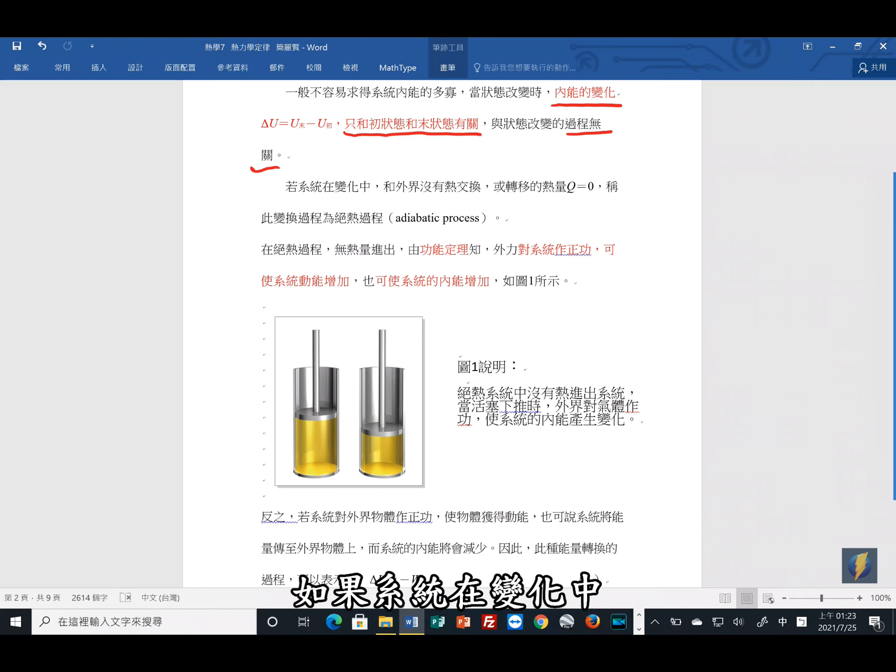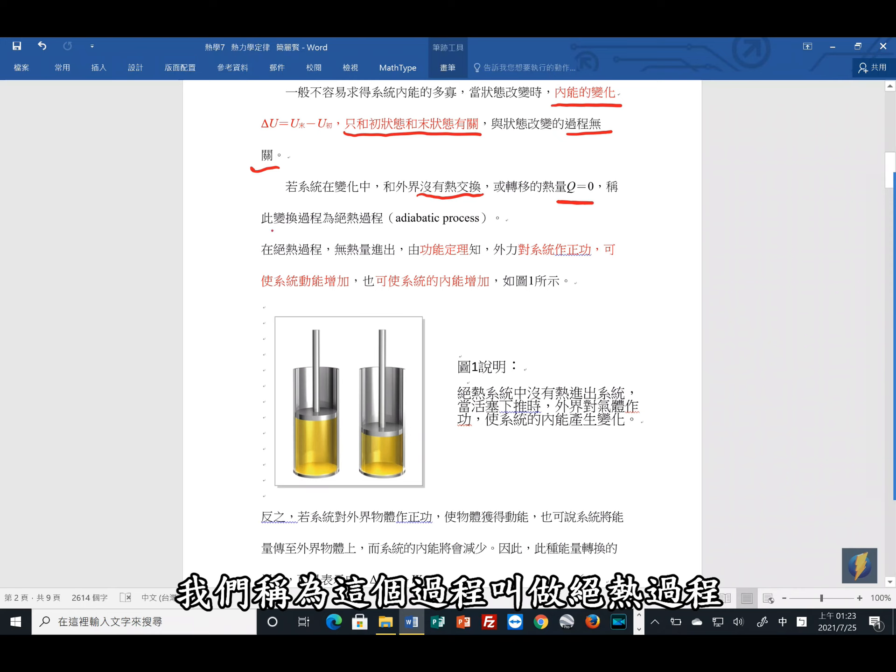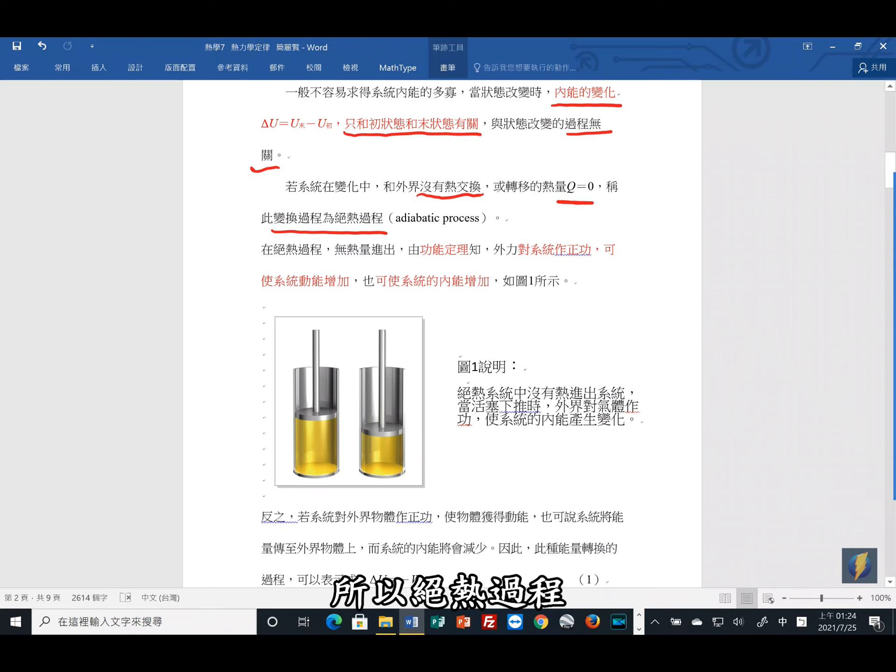如果系统在变化中和外界没有热交换,或者是转移的热量是零,我们称为这个过程叫做绝热过程。所以绝热过程,未来各位可能会常听到这个名词,那就是里面跟外面,系统内跟系统外,它并没有热的交换。